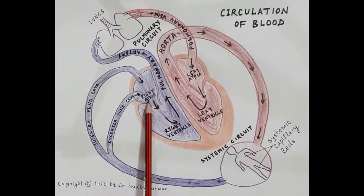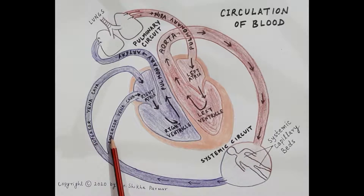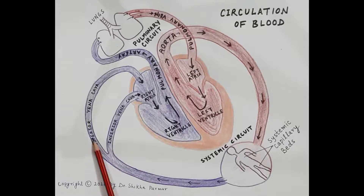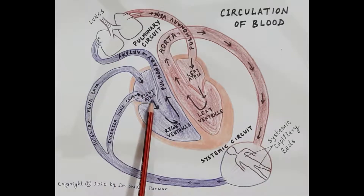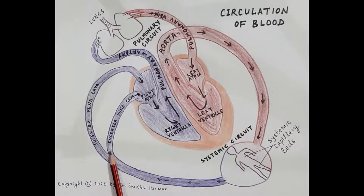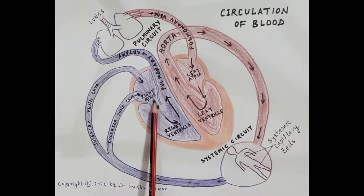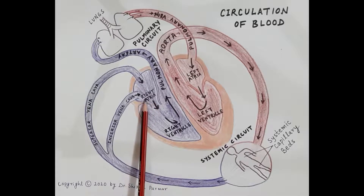It is the right atria that receives deoxygenated blood from the body. There are two veins: one is the superior vena cava and the other is the inferior vena cava. The superior vena cava brings deoxygenated blood from the upper part of the body, and this blood is received by the right atria. So the right atria receives deoxygenated blood from the entire body.